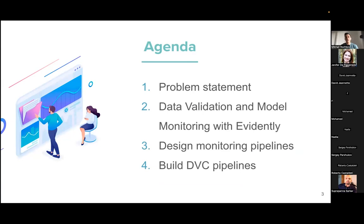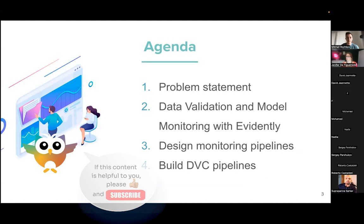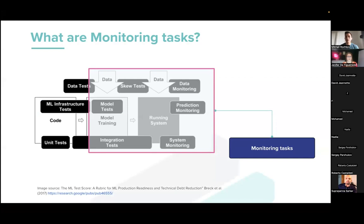Today we'll talk about data validation and model monitoring, and specifically we'll focus on how it works with Evidently and how we can build DVC pipelines with this functionality. I'm sure that you know this picture about a stack of different technical problems and tasks for machine learning projects, and some parts are about data validation and monitoring. We have tasks for data validation at model training stages, and then we need to monitor our data, predictions, and system when we run our models in production.